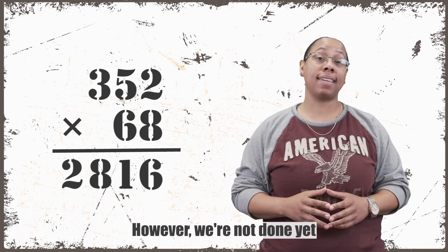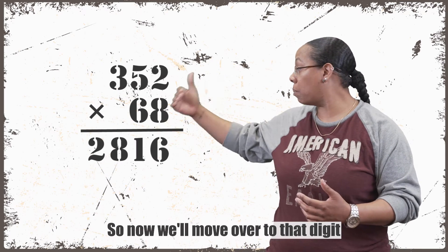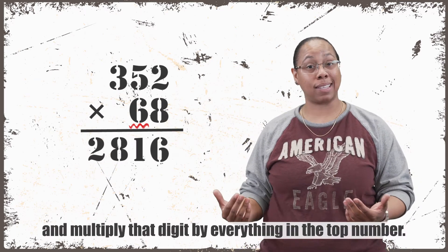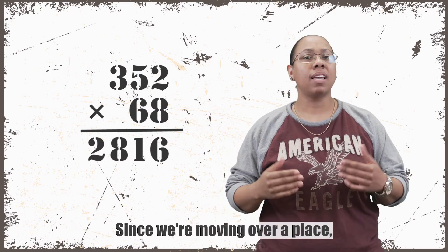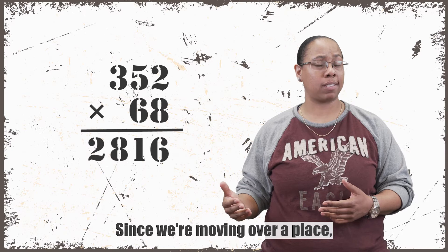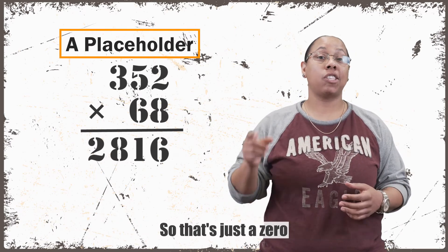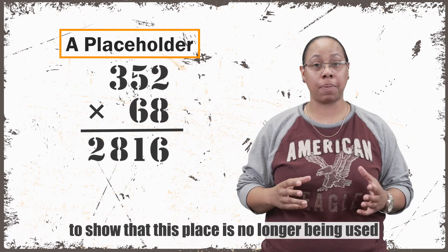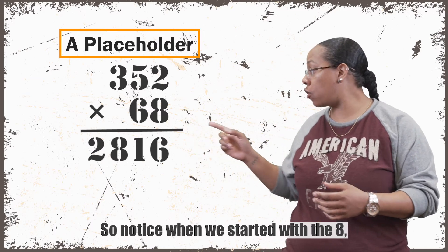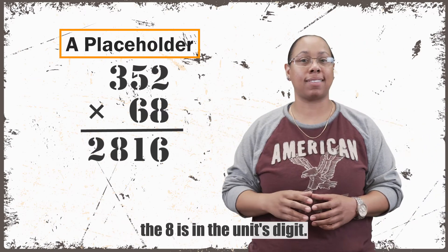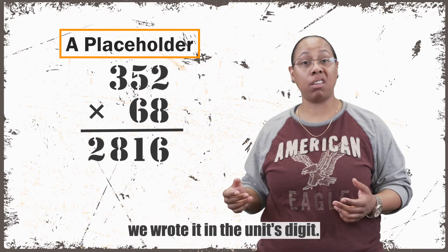However, we're not done yet because there's still another digit in our bottom number. So now we'll move over to that digit and multiply that digit by everything in the top number. Since we're moving over a place, we have to use what's called a placeholder. So that's just a 0 to show that this place is no longer being used, but we're starting in the next column.